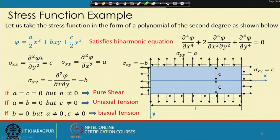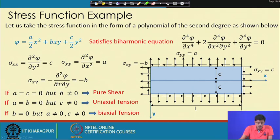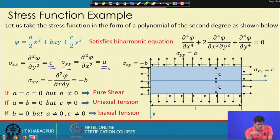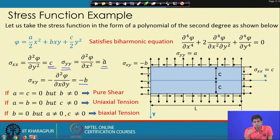If we compute the stresses — σxx = ∂²φ/∂y², σyy = ∂²φ/∂x² — taking derivatives gives σxx = c (a constant), σyy = a, and σxy = -b. These three constants represent different types of stress states in the body.